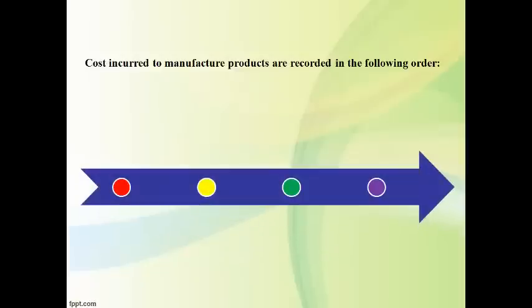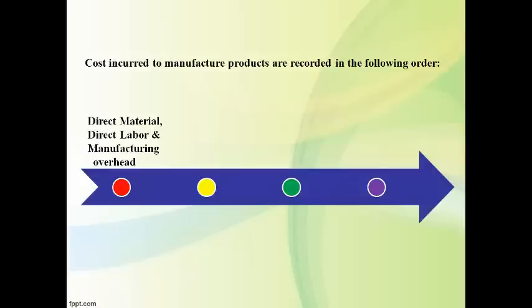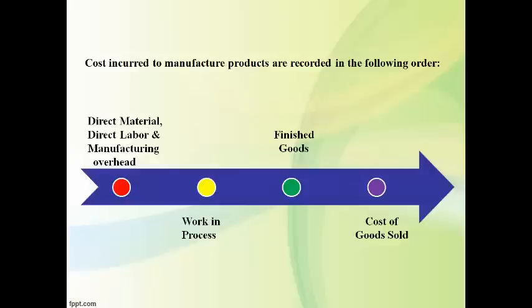The three product costs are incurred when direct materials are moved to the production line and direct labor works on the production line. You can view manufacturing overhead as the production line, which is where work in process occurs, because manufacturing overhead mostly consists of the cost of the facility and the management that supervises the process. The costs in work in process move into finished goods when production is complete, and these same costs move to cost of goods sold when products are shipped to customers. It is important to notice that the three product costs move into work in process, then to finished goods, and then on to cost of goods sold.